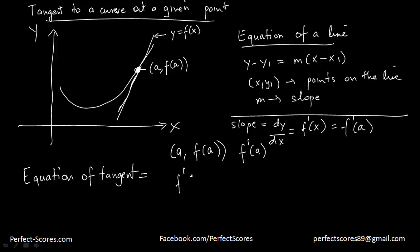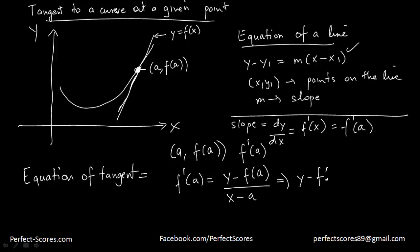So the equation of the tangent is: y minus f(a) equals f'(a) times x minus a. That is, the tangent passes through the point (a, f(a)) and has slope f'(a), so applying the line formula gives y minus f(a) = f'(a) times (x minus a). This is the equation of a tangent at a given point.